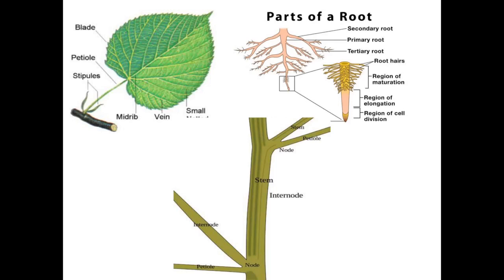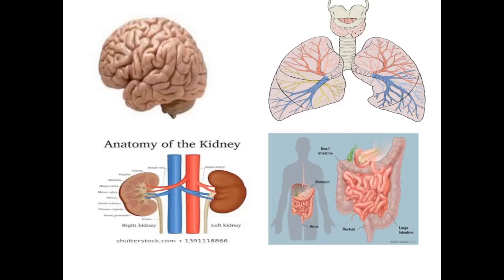See the picture. Leaf, root — tap root and fibrous root — these are the stem pictures. Then, brain is the first one; second, lung; kidney and intestine. These are the organ pictures for plants and human beings.